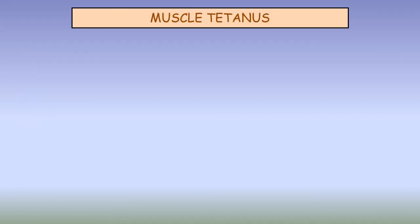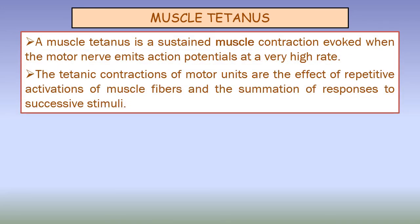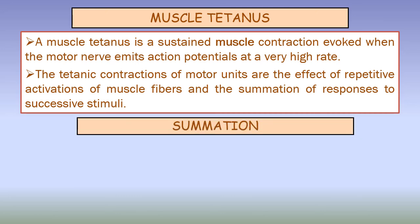Now let us learn about muscle tetanus. Each motor neuron that leaves the spinal cord innervates multiple muscle fibers, with the number of fibers innervated depending on the type of muscle. All muscle fibers innervated by a single nerve fiber is called a motor unit. A muscle tetanus is a sustained muscle contraction evoked when the motor nerve emits action potentials at a very high rate. The tetanic contractions of motor units are the effect of repetitive activations of muscle fibers and the summation of responses to successive stimuli. Summation means the adding together of individual twitch contractions to increase the intensity of the overall muscle contraction.